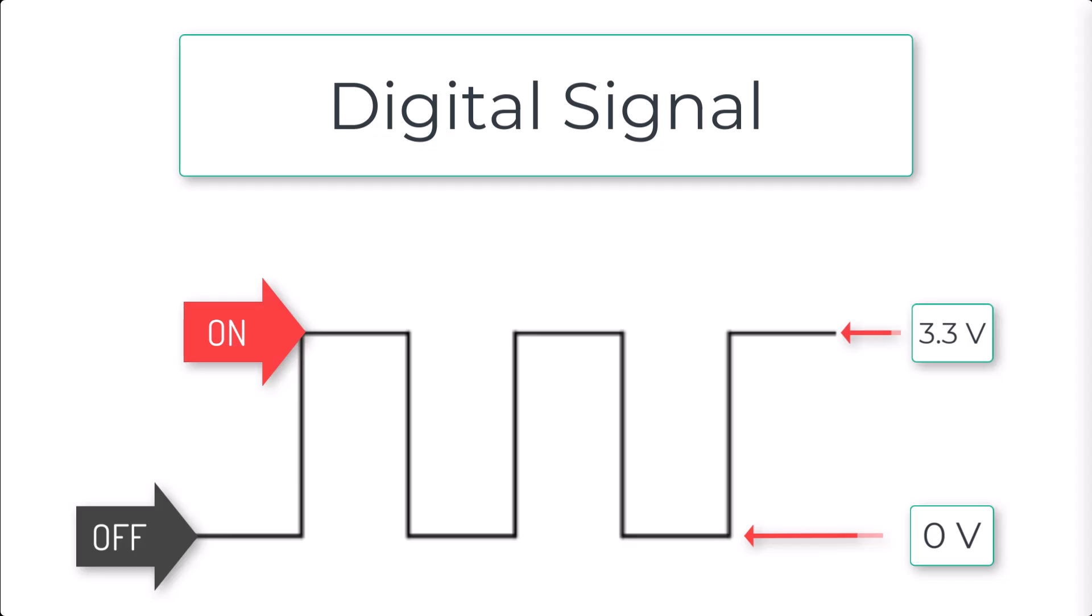Digital signals are binary in nature. They switch between these two defined levels with no intermediate value, so you won't see 1.5 volts or anything in between as a valid state in this example. It's either all or nothing.